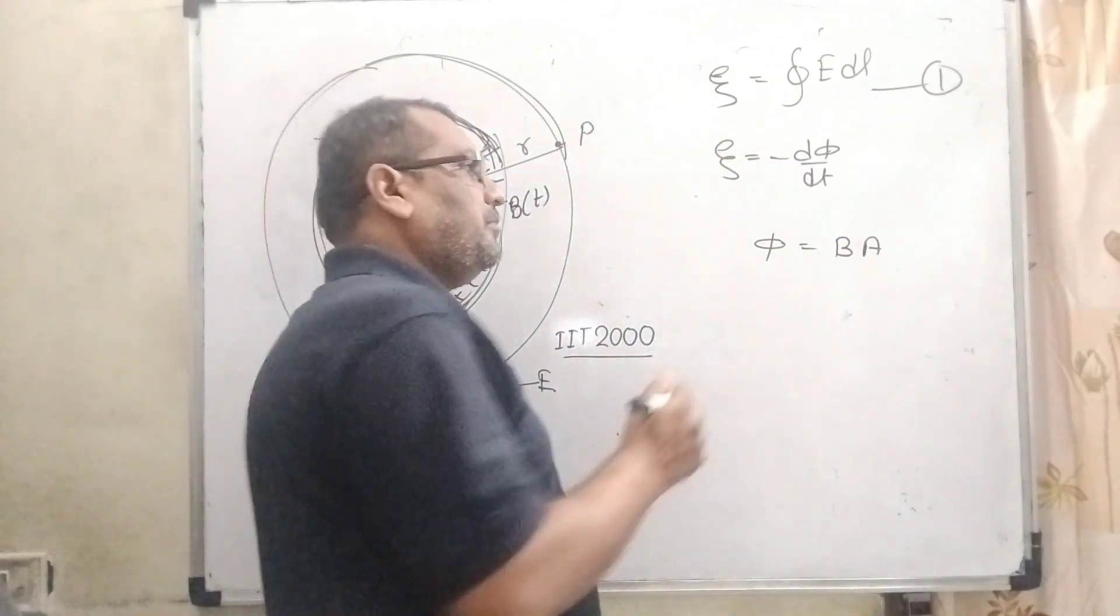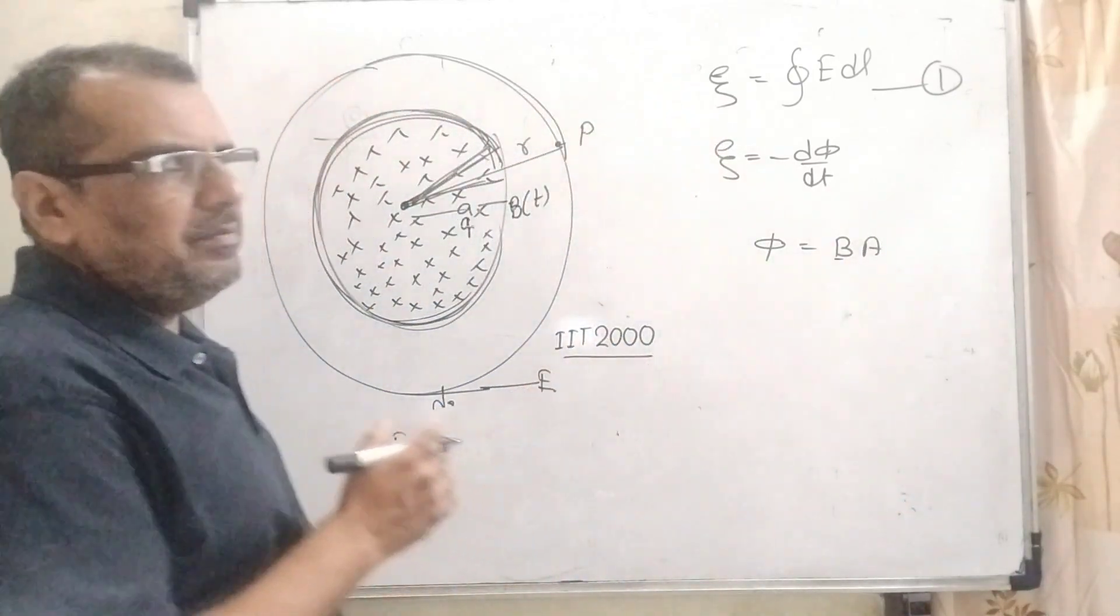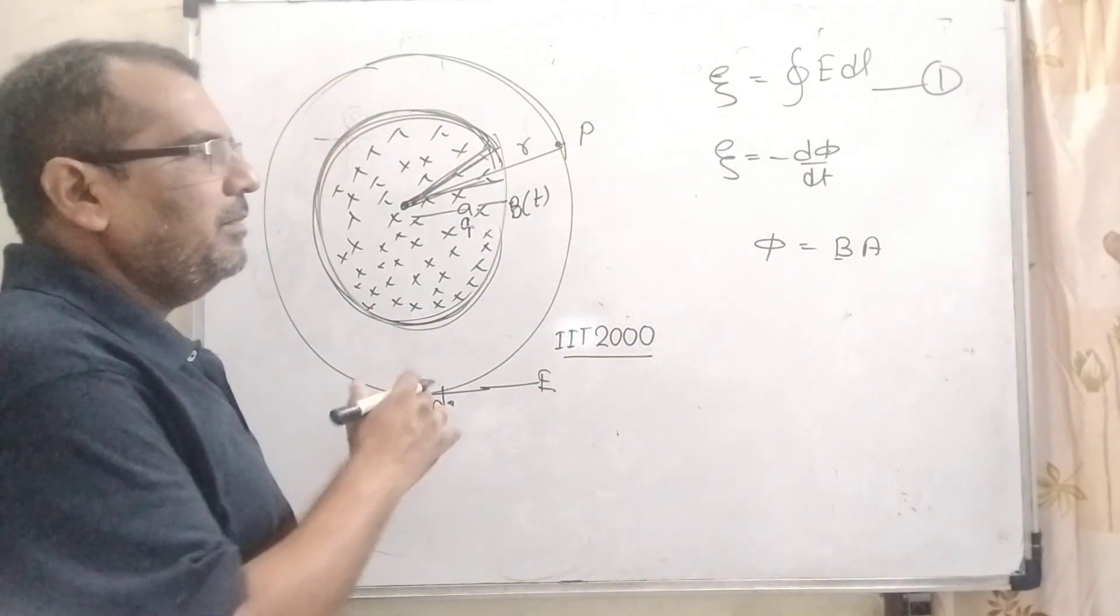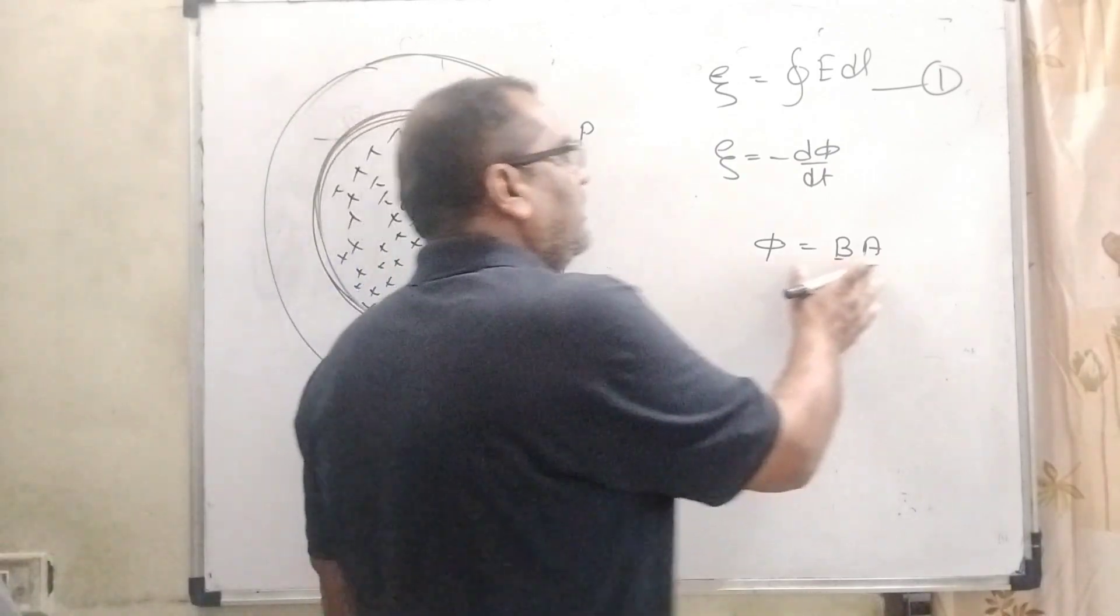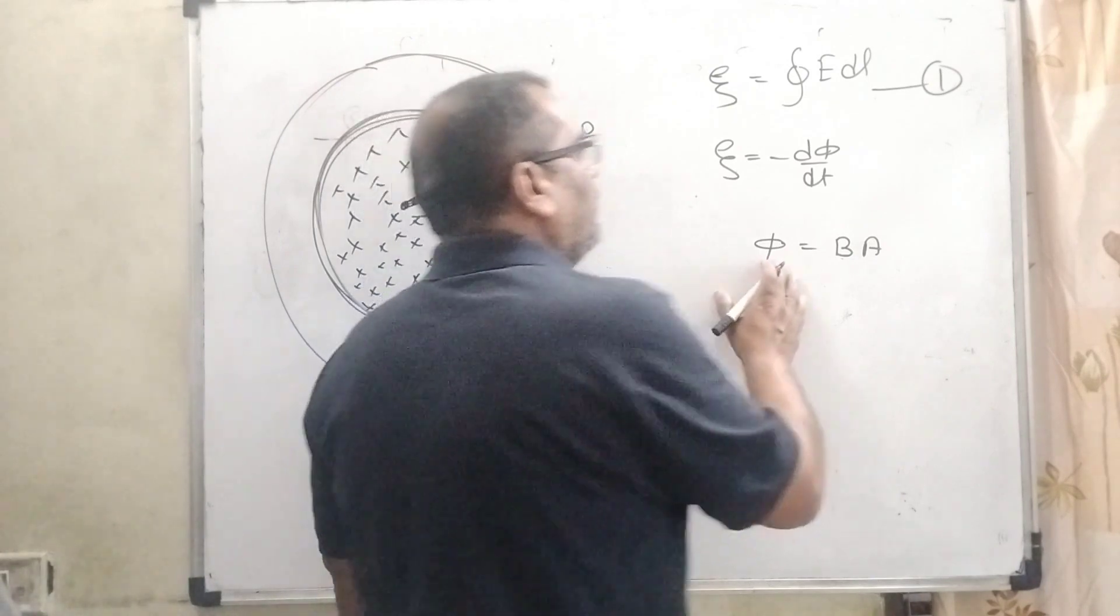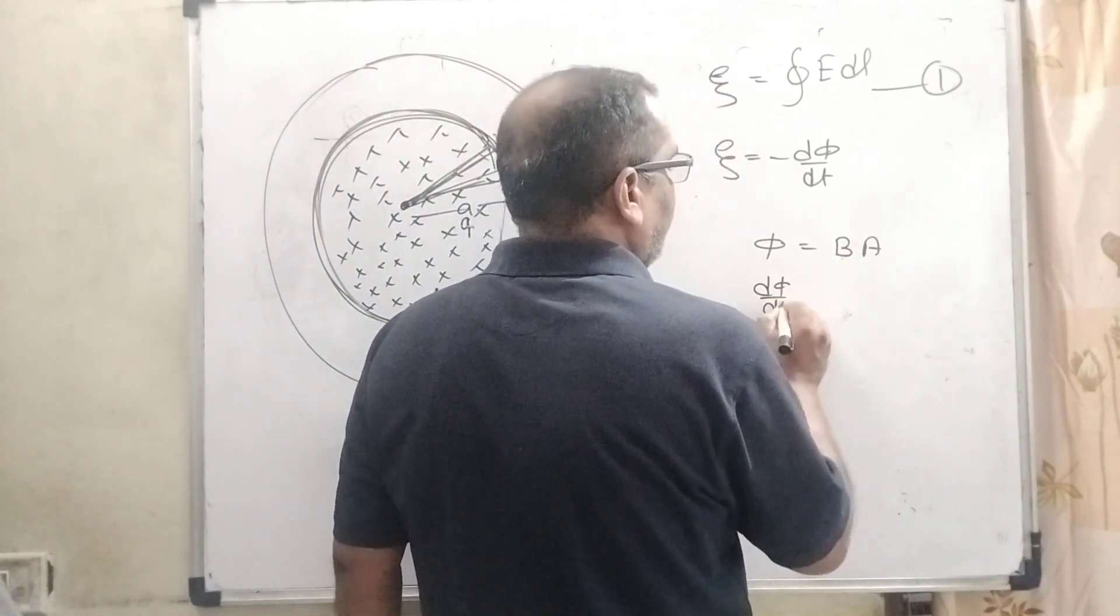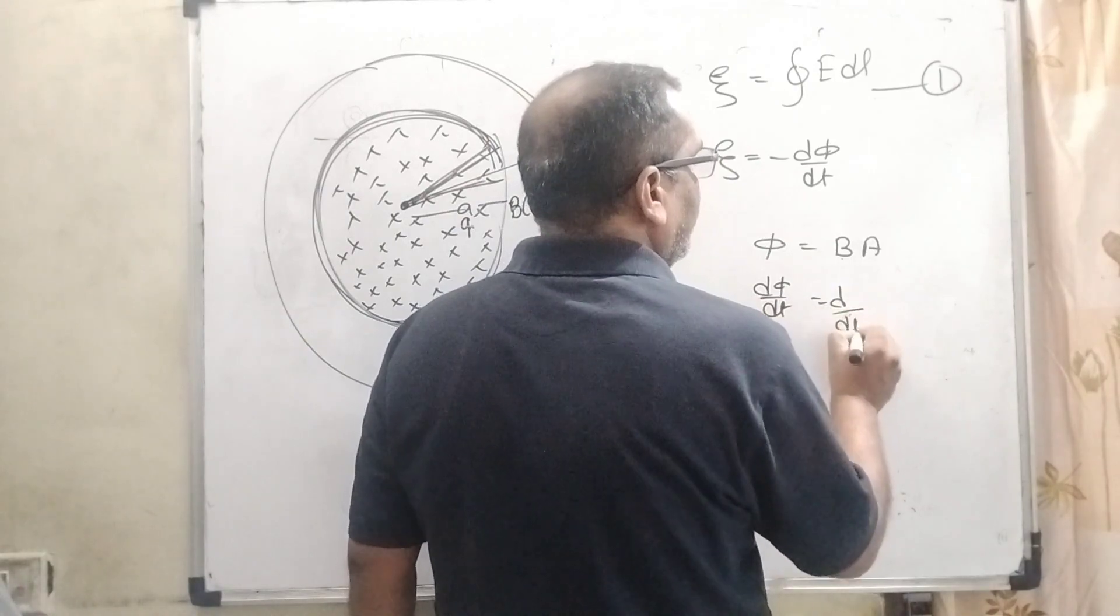B is the magnetic field and A is the area with cosθ. There is no need for cosθ because it is perpendicular, so the angle between B and A is 0 and cos(0) = 1. Therefore, φ = B·A. Now differentiate both sides with respect to time: dφ/dt.